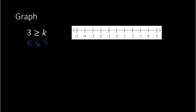So when I graph this, I'm graphing all the possible answers for k. k is smaller than 3 or equal to 3. So my shading, starting at 3, is going to go to the left. We shade in to the left, and it's going to be a closed circle because of the less than or equal to sign. The equal sign means k could equal 3 as well. So be careful that you're reading from the variable — if it helps, put the variable first like we did here.